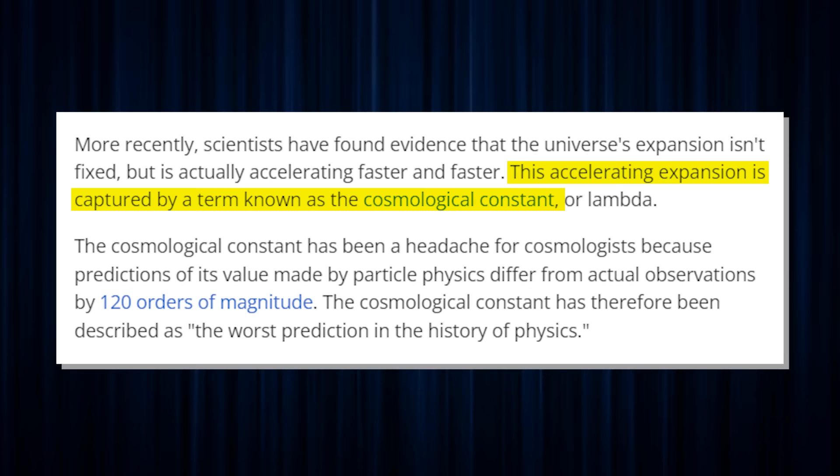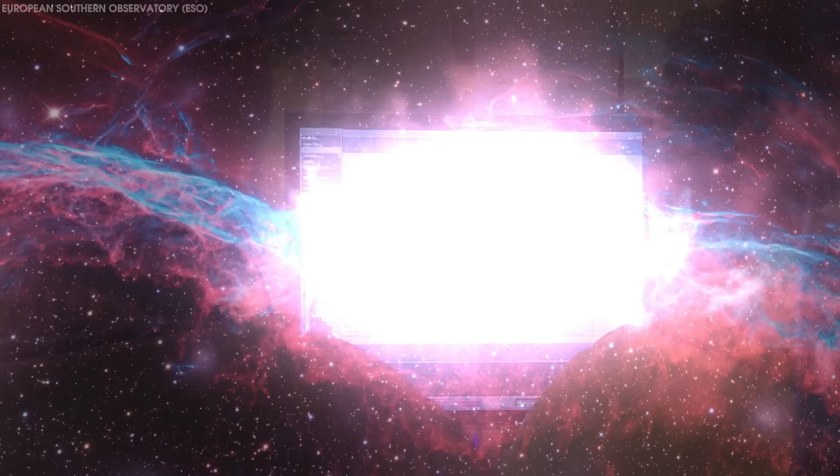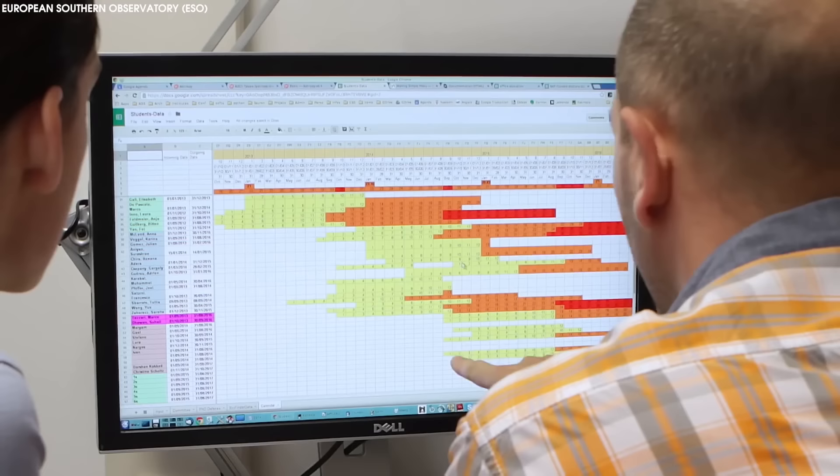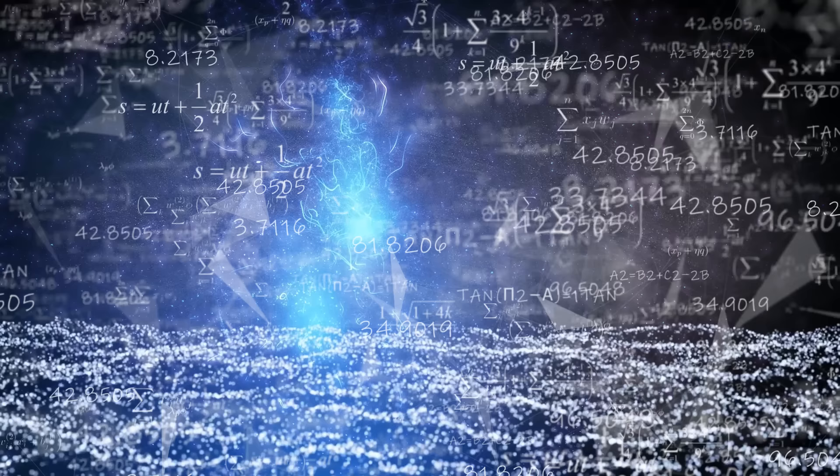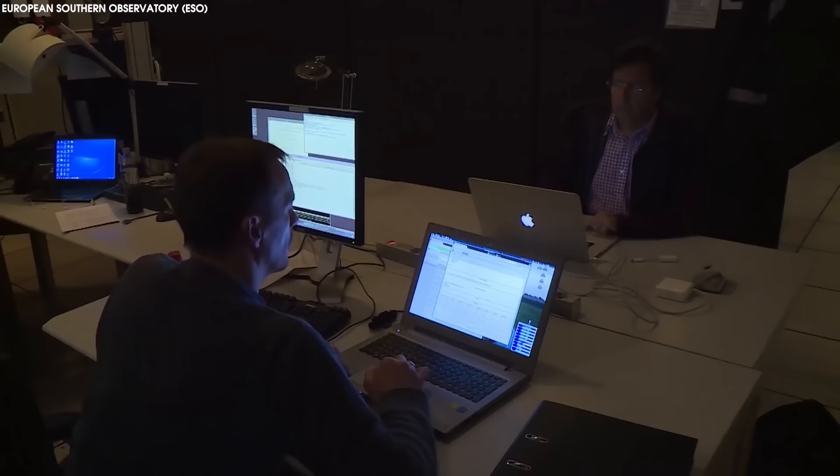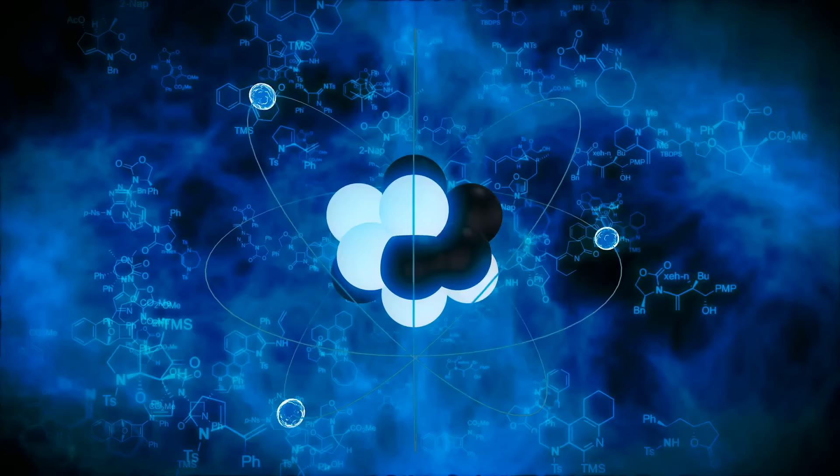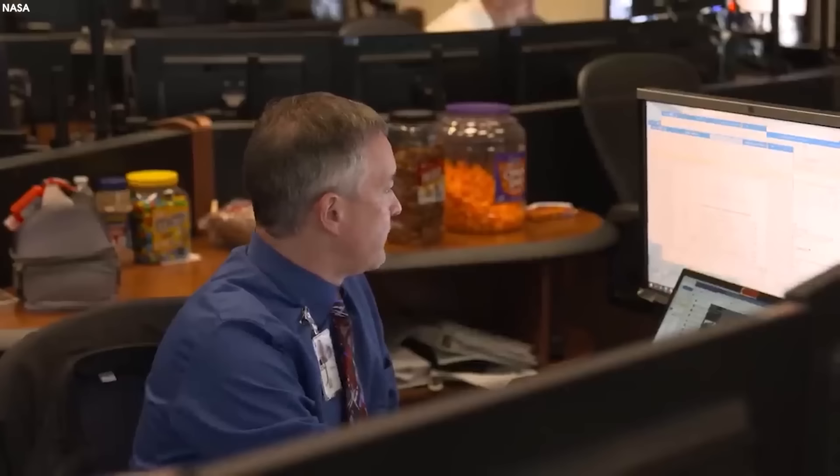This accelerating expansion is captured by a term known as the cosmological constant, or lambda. The cosmological constant has been a headache for cosmologists because predictions of its value made by particle physics differ from actual observations by 120 orders of magnitude. The cosmological constant has therefore been described as the worst prediction in the history of physics. Cosmologists often try to resolve the discrepancy between the different values of lambda by proposing new particles or physical forces, but Lucas Lombreiser tackles it by reconceptualizing what's already there.